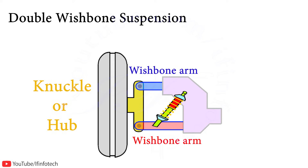The double wishbone system offers a smoother driving experience without affecting wheel alignment, unlike the MacPherson strut suspension. However, due to the high number of parts, the double wishbone system is heavier and takes up more space than other suspension systems.